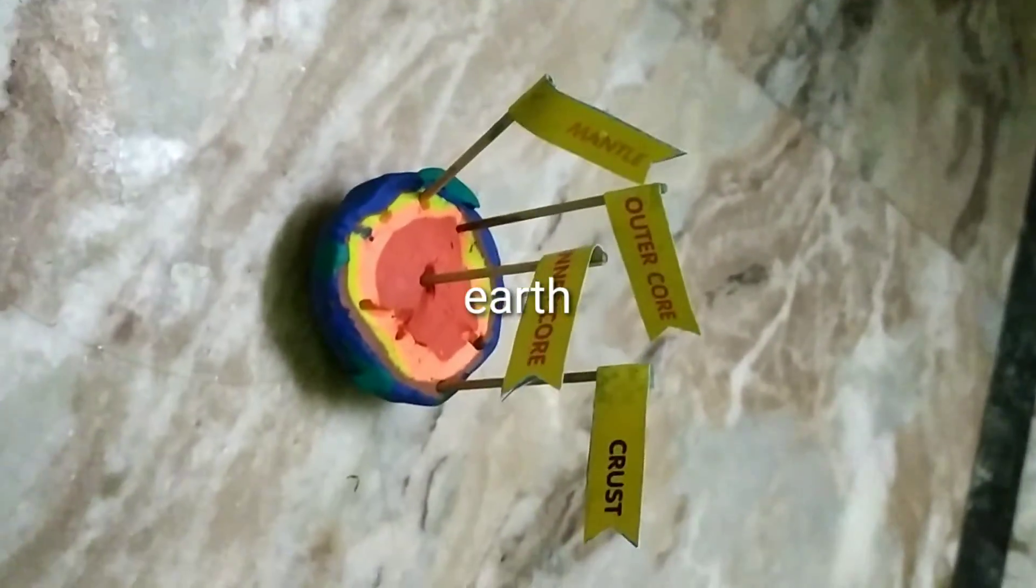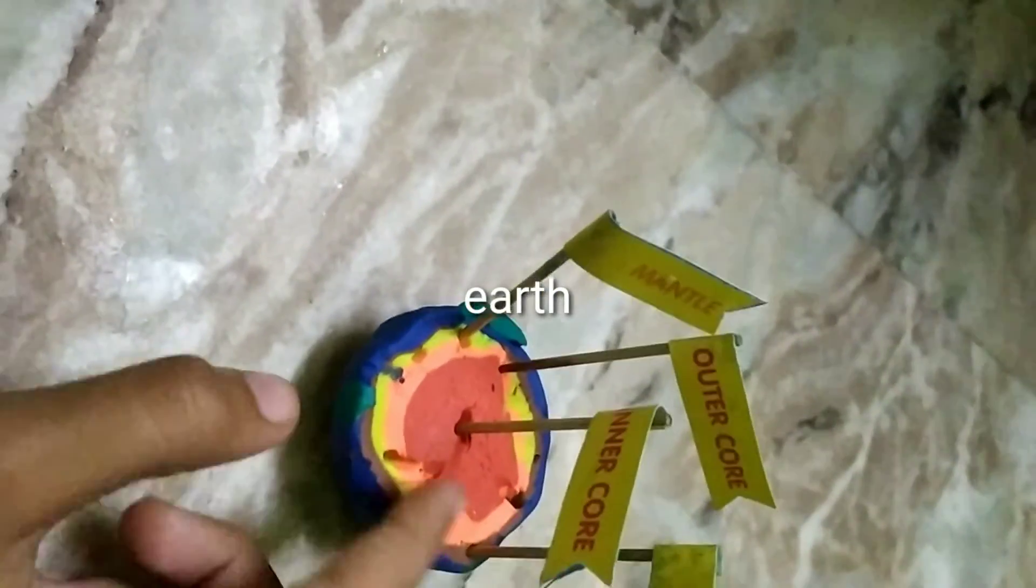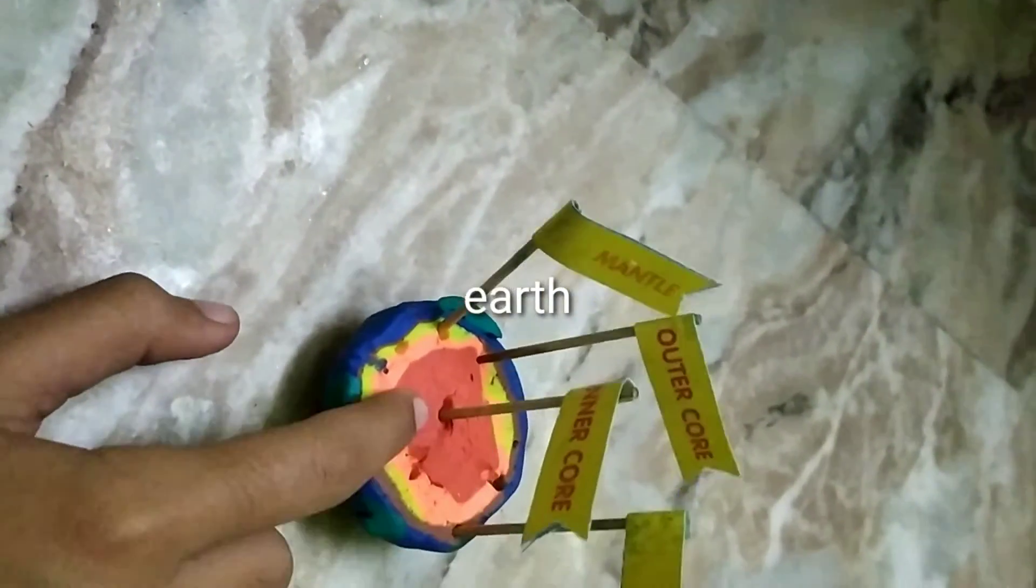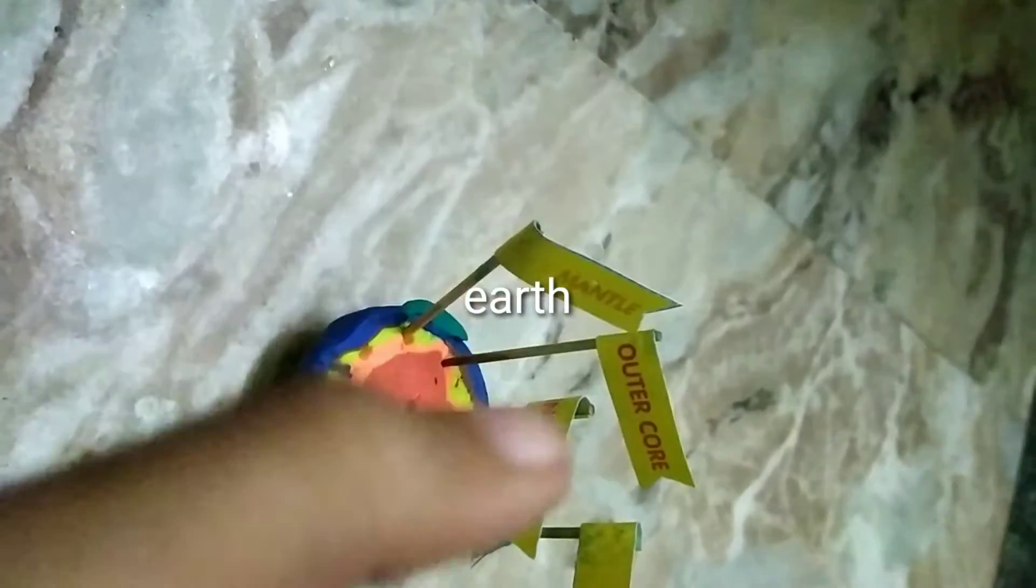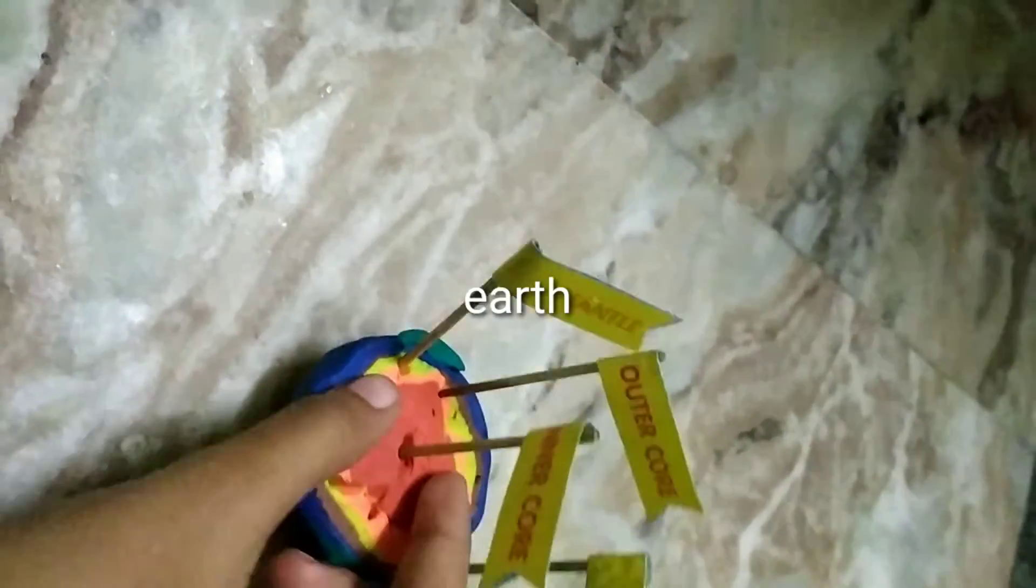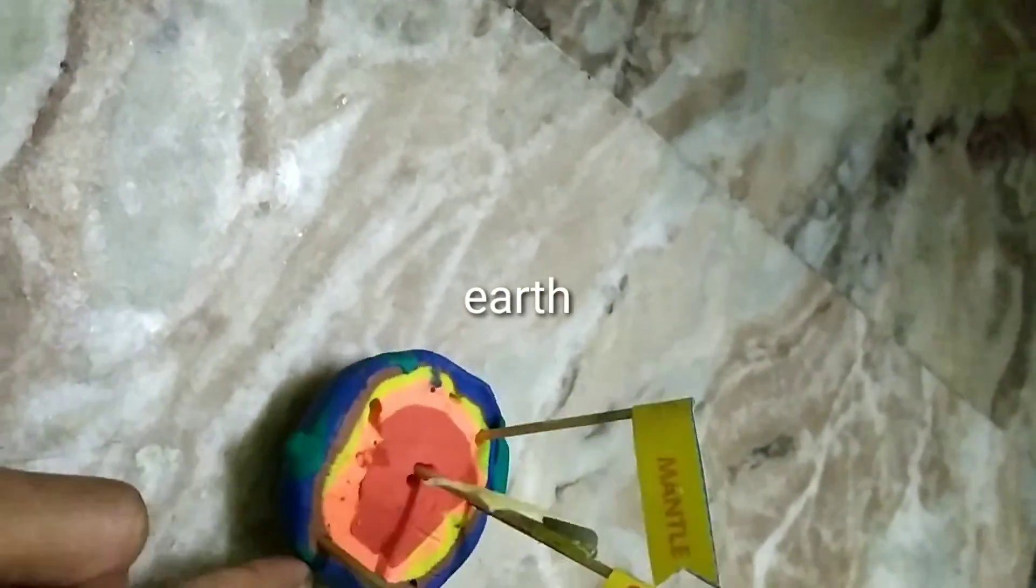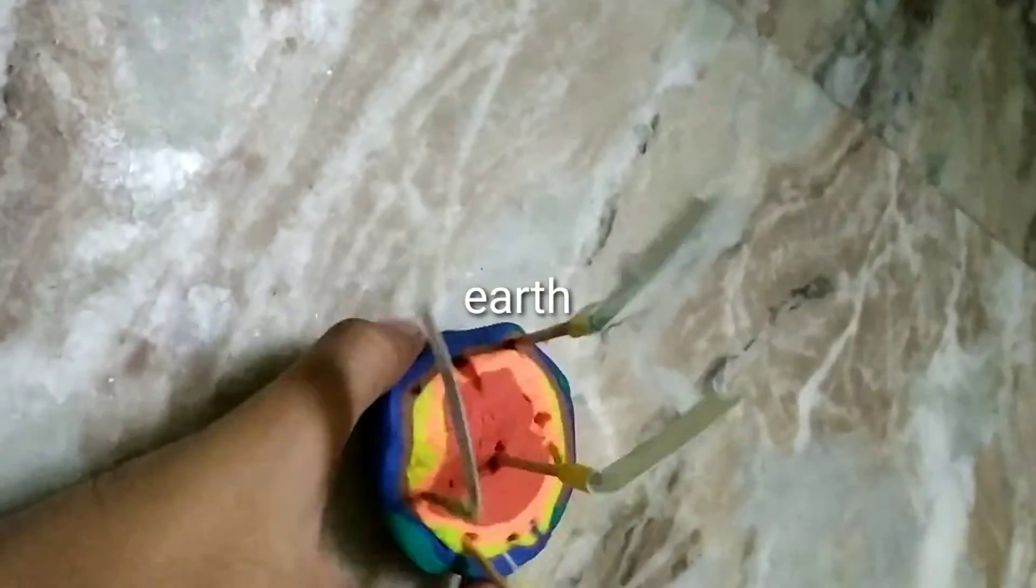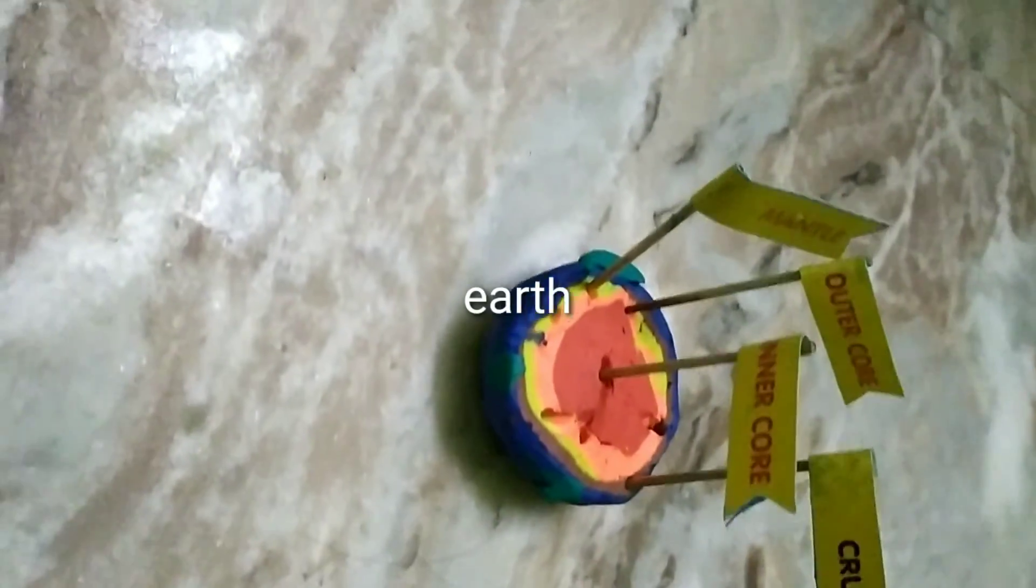So you can see these are the main layers. With these layers there is rotation that makes the Earth go round and around the sun. So this is a very good model. You can also make it at home.